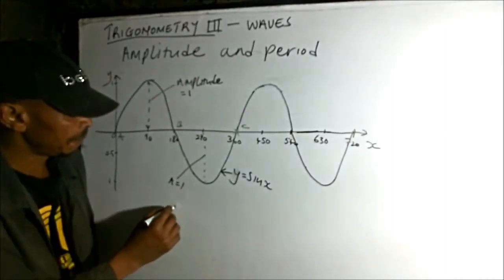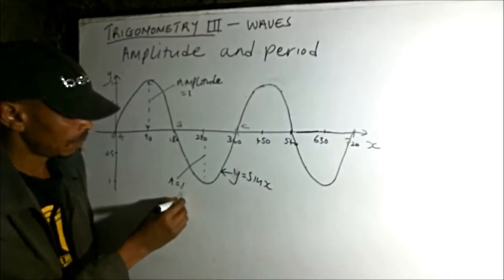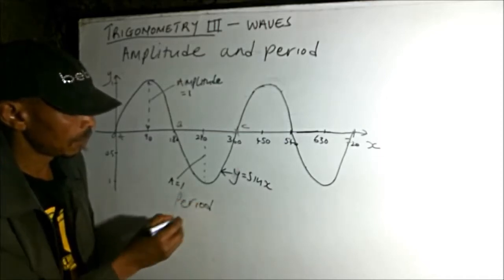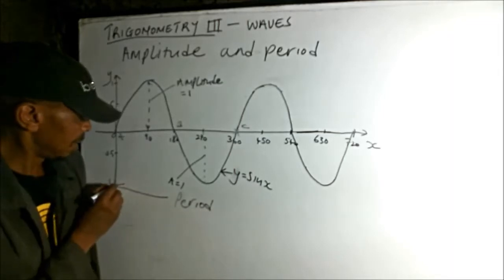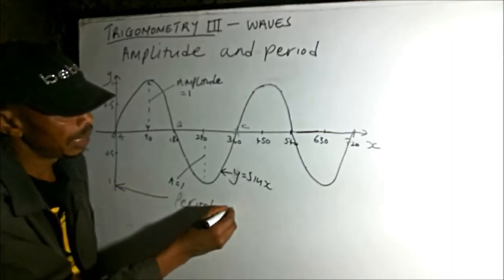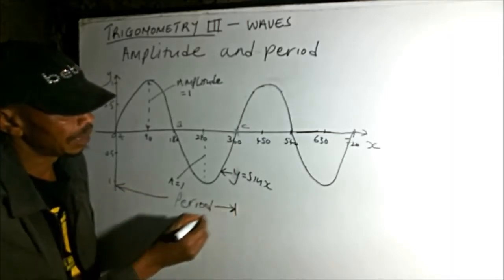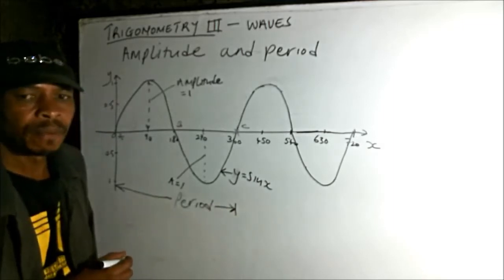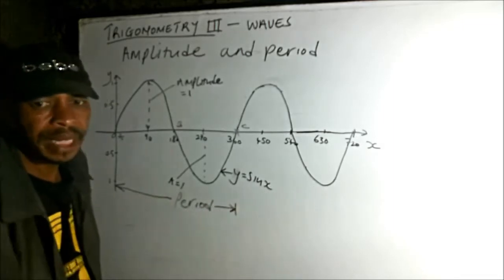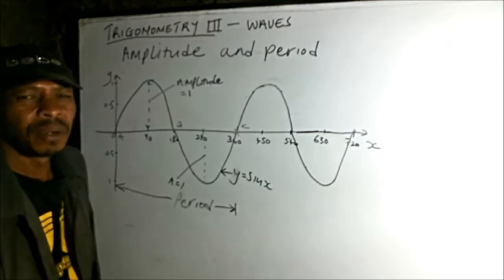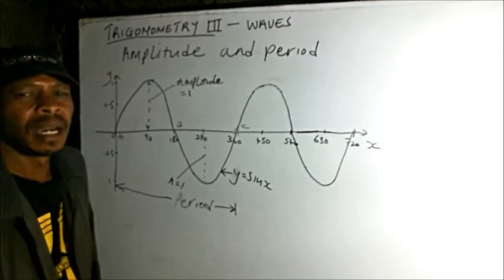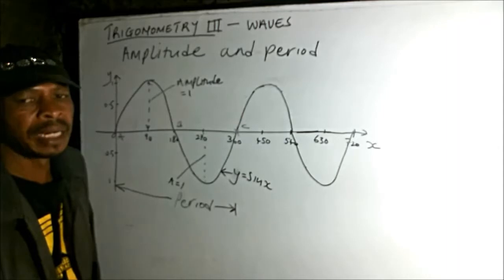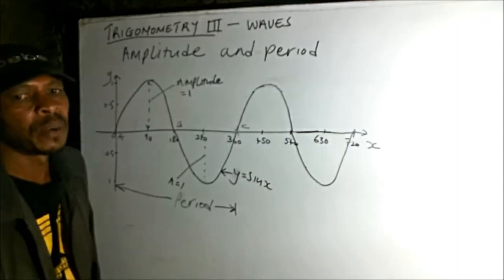Period, we can say, is up to where we make a complete cycle. So that is what we define as amplitude and the period of a wave.